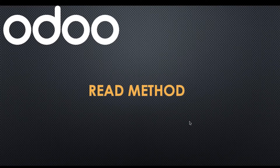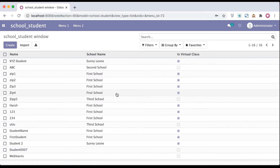In this discussion, you can see how to use the read method and what is the purpose of this method. If you missed the previous discussion about how to use the search_count method, please check the link given in the description. First, I am going to the browser. You can see here there are total 16 profiles available. In this discussion, we are trying to differentiate the search and read methods.